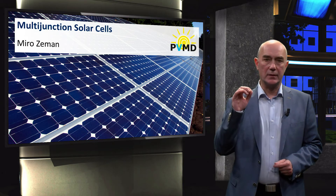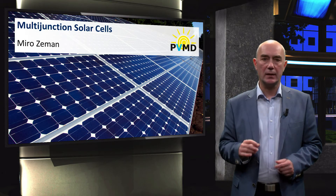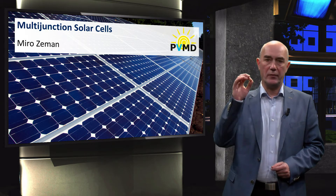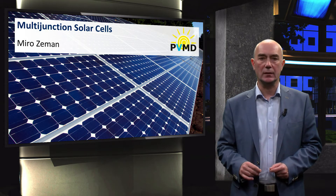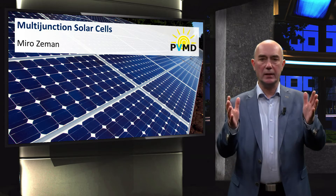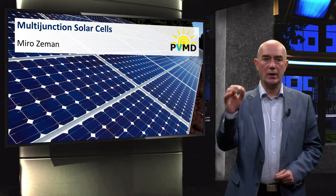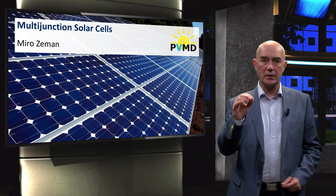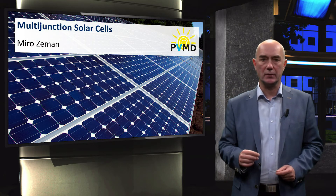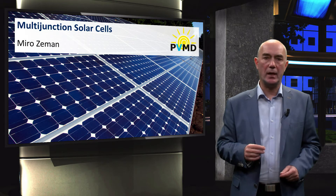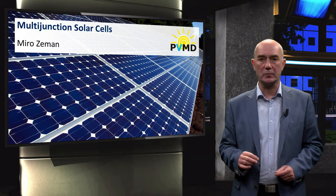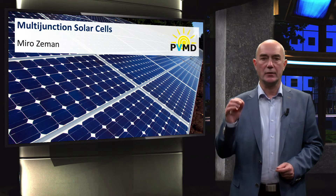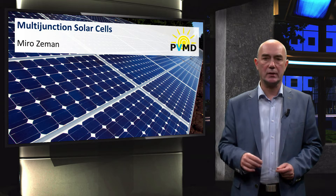Early in the week, we discussed the Shockley-Queisser limit as a fundamental limit for conversion efficiency of a single junction solar cell. A key word here is single junction. In this video, we will introduce the concept of multi-junction solar cells. They are used to surpass the theoretical maximum conversion efficiency of single junction solar cells, the so-called Shockley-Queisser limit.